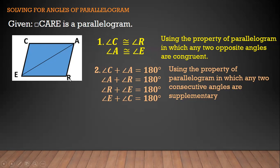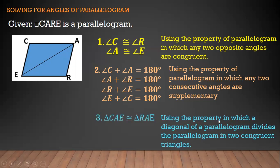Angle A plus angle R is equal to 180 degrees. Angle R plus angle E is equal to 180 degrees. And angle E plus angle C is equal to 180 degrees. Also, a diagonal of a parallelogram divides the parallelogram into two congruent triangles, so triangle CAE is congruent to triangle RAE.